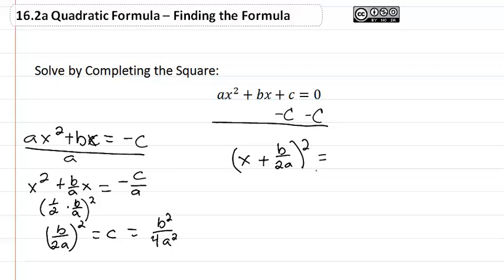equal to our negative c over a, whoops that's supposed to be a c, plus b squared all over 4a squared.